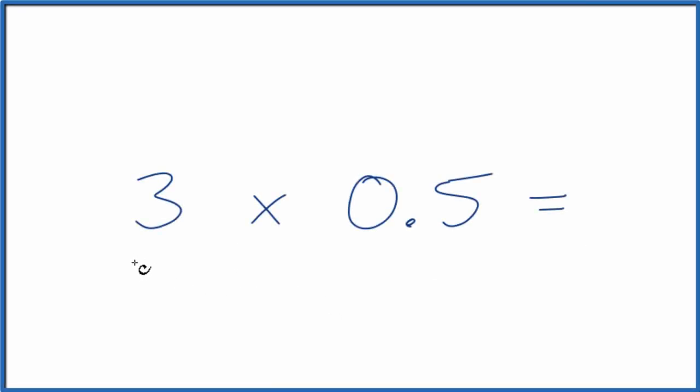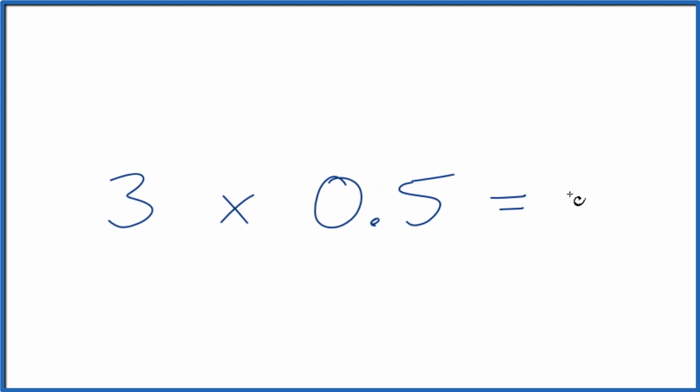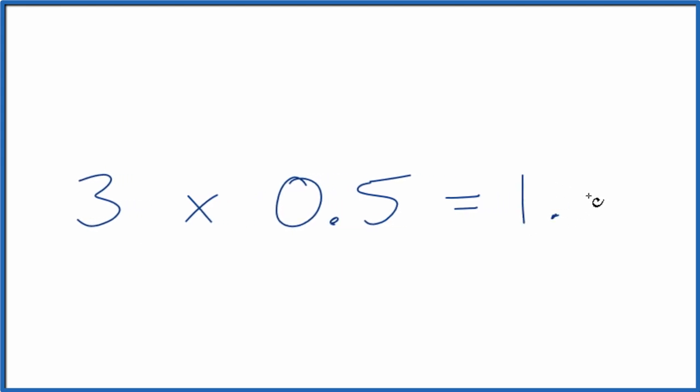If you're asked to multiply 3 by 0.5, here's a few ways to think about that. First, you could just do it on a calculator. 3 times 0.5, that's 1.5. So that's the first way.